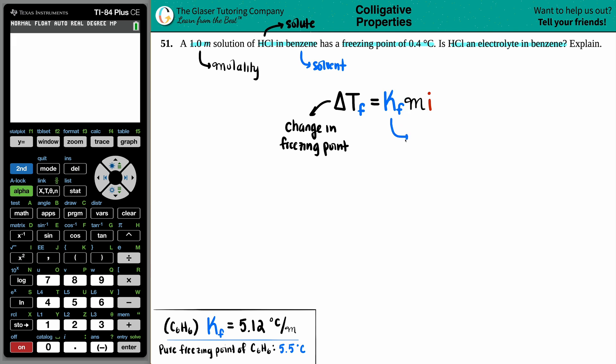This KF value is a constant value for your solvent. I went in the textbook and found that the KF value for benzene, which is C6H6, is 5.12 degrees Celsius per molality.